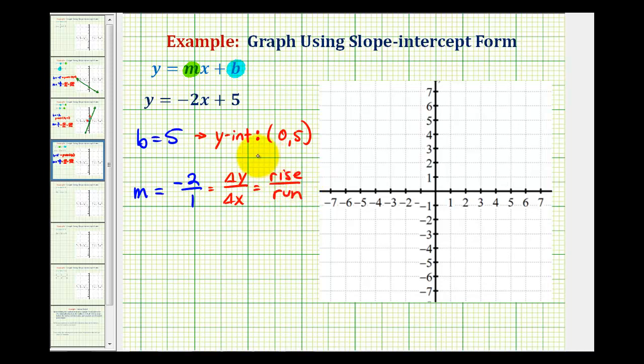And this is all the information we need to graph this line. We'll first plot the y-intercept, which is positive 5 here. And then from the y-intercept, we'll use the slope to find additional points.